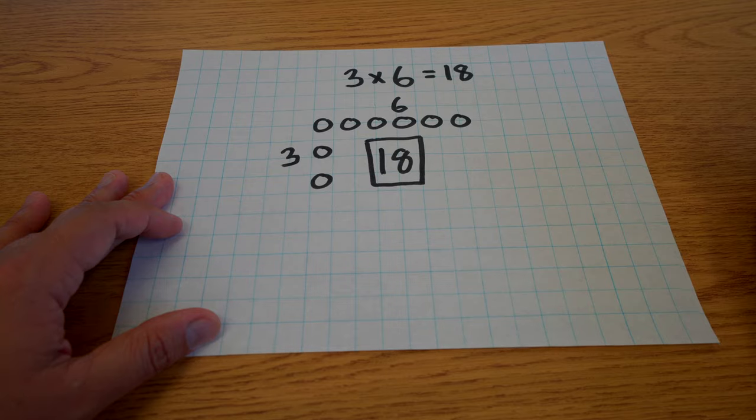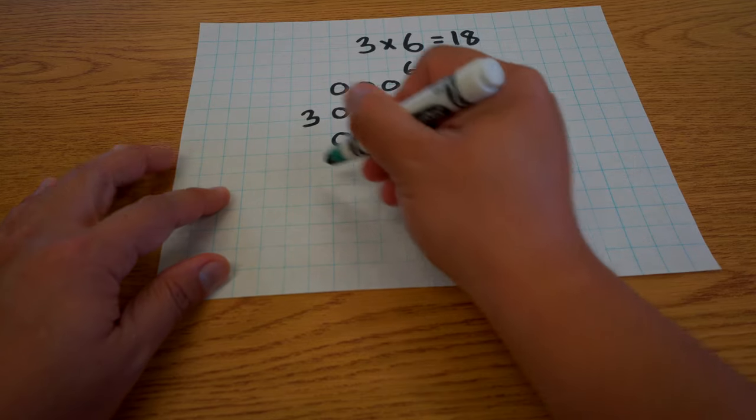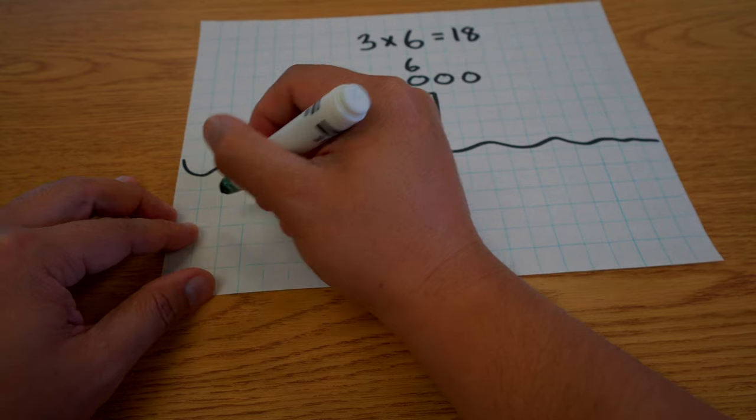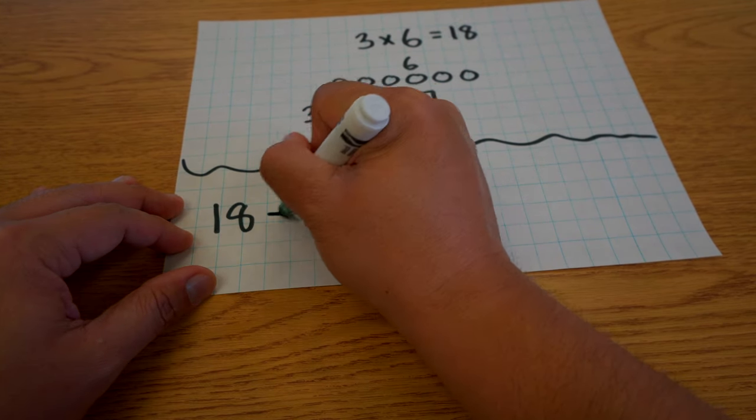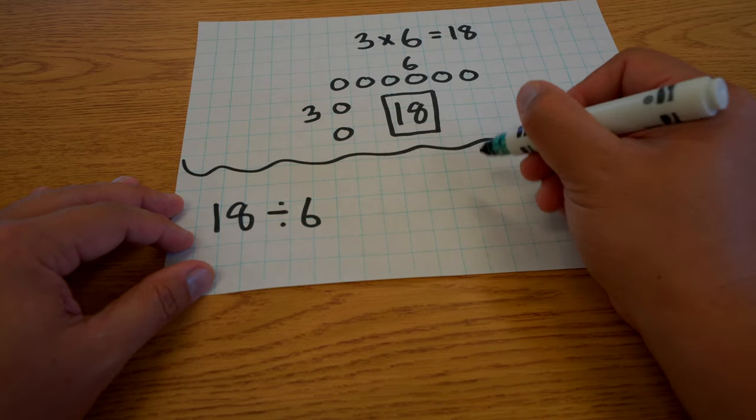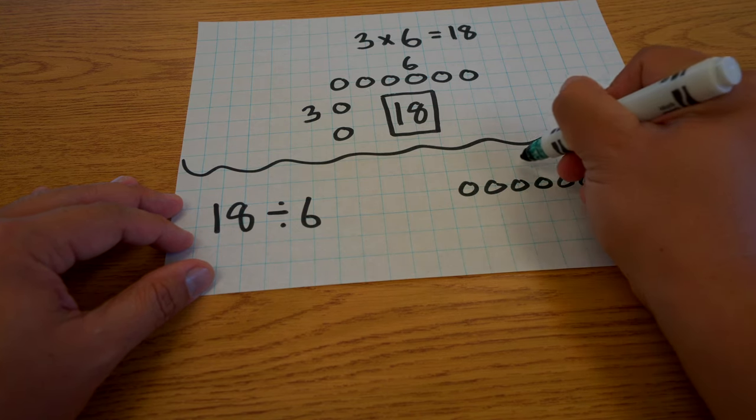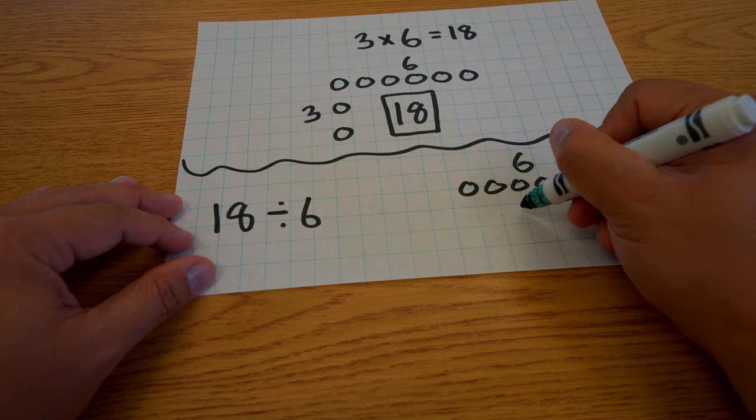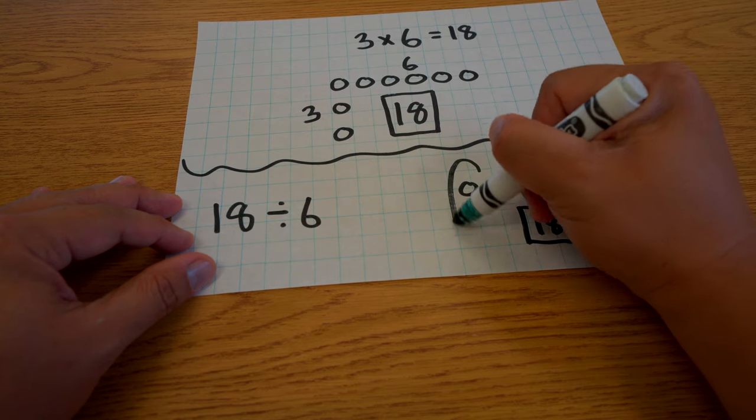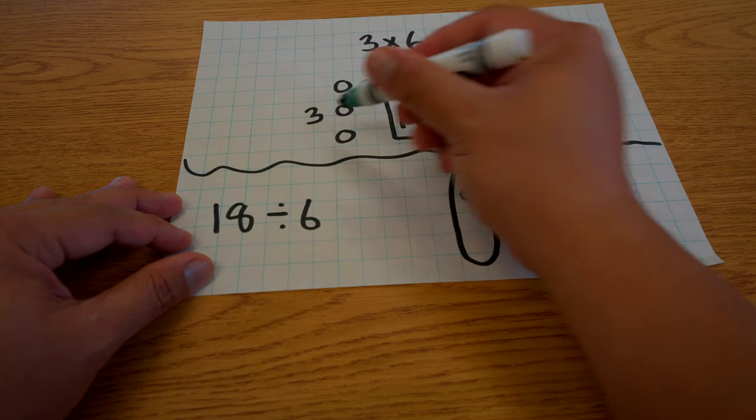Now you also might get a division problem. I'm just going to use the same numbers here, but let's say, let me split that in half there. Let's say we had 18 divided by six. Okay. Well, we know that we have one side is six, and we know that the total is 18. So using the fast array, we're trying to find the missing number, which of course should be three.